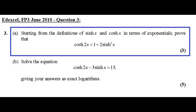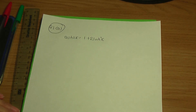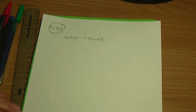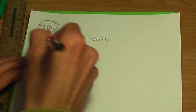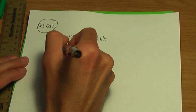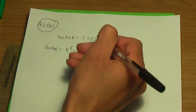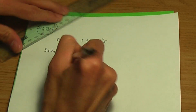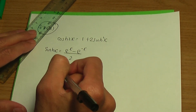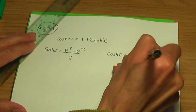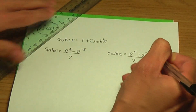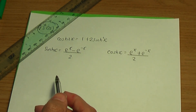Let's go back to the paper and pen. To prove a hyperbolic identity using the definitions, we start with the definitions of hyperbolic sine and hyperbolic cos. Hyperbolic sine x is defined as e to the x minus e to the minus x divided by 2. Hyperbolic cos x is defined as e to the x plus e to the minus x divided by 2.